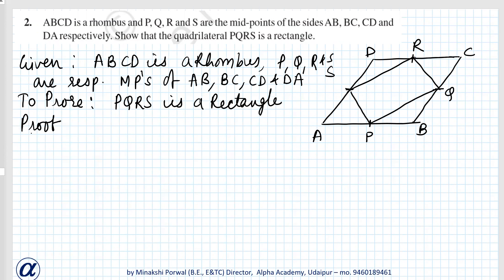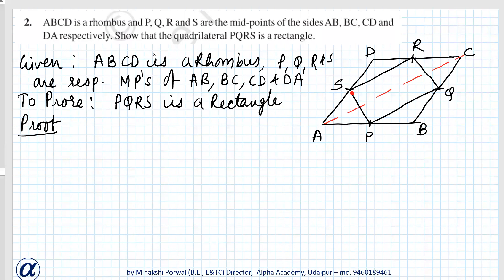First of all, we will join AC. In triangle ADC, S is the midpoint and R is the midpoint of two sides of the triangle. Therefore, SR is parallel to AC and SR is half of AC.